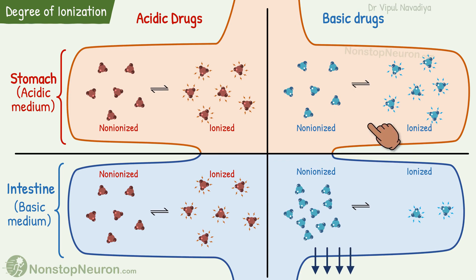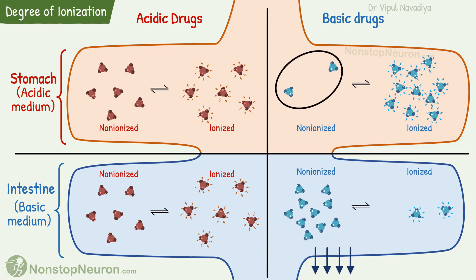On the other hand, secretion from the stomach is acidic. In such a medium, the basic drug would largely get converted into the ionized form. So the portion of non-ionized form would be small, and basic drugs are poorly absorbed from the stomach. In short, basic drugs are absorbed better from the intestine.